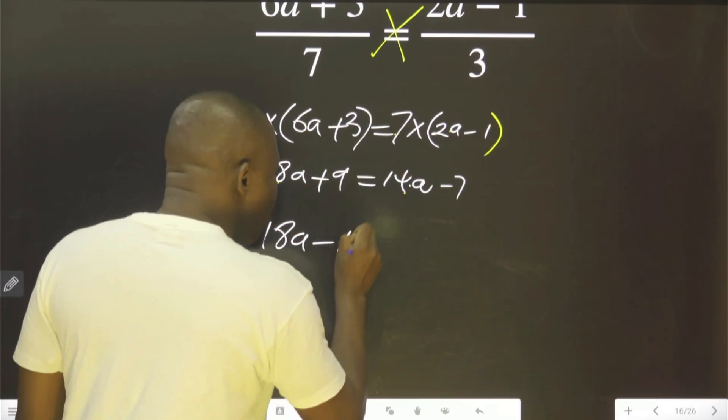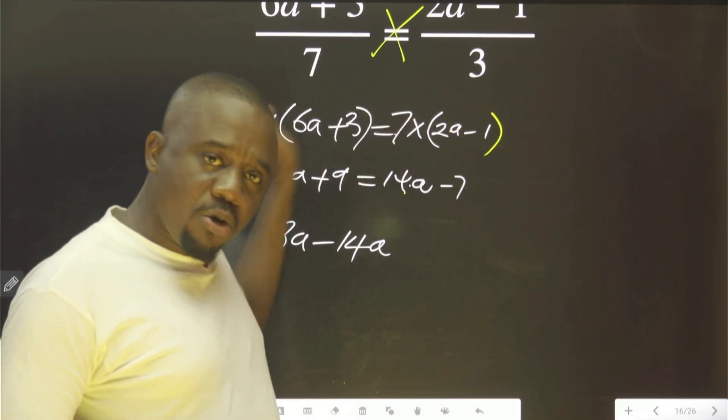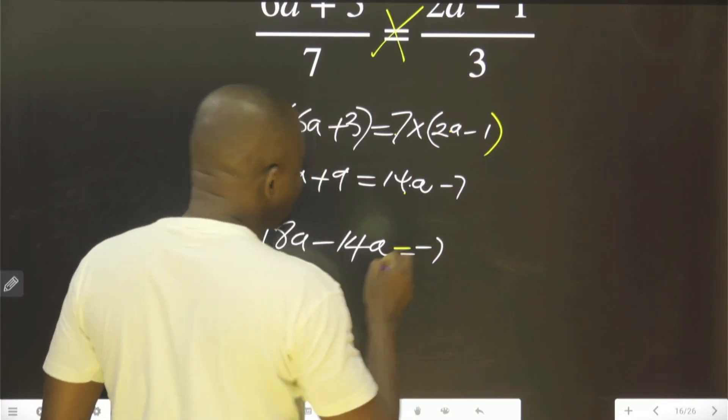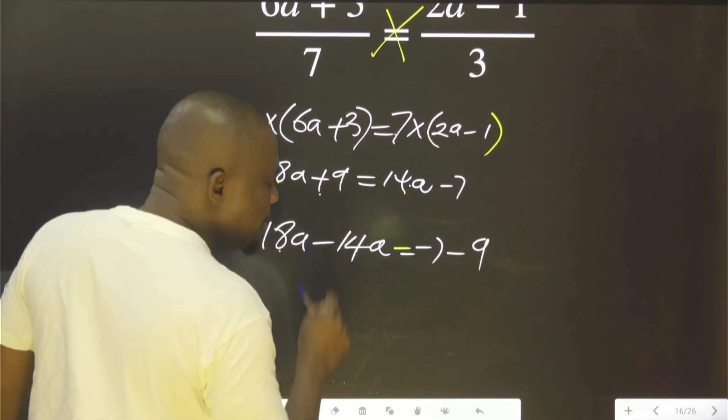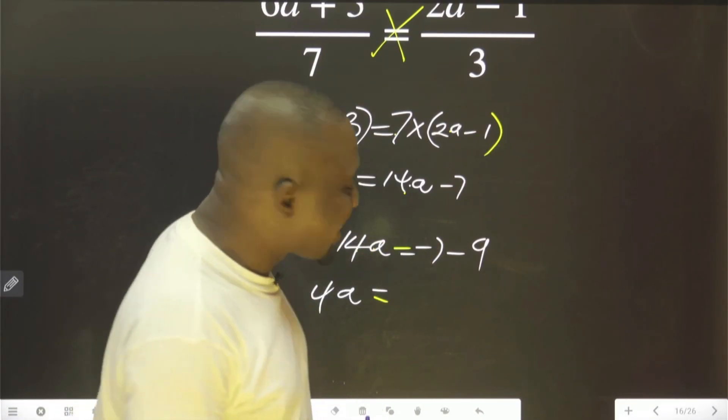Because here you are plus, on this other side you have to be minus. You go and meet minus 7. While you are crossing, you become minus. Plus becomes minus. This minus this minus gives us 4A. Minus 7 minus 9 is minus 16.